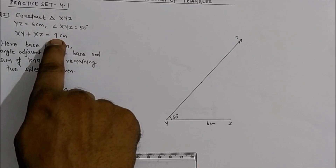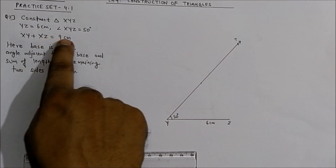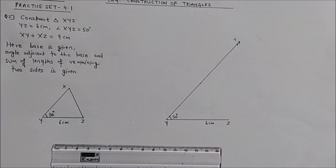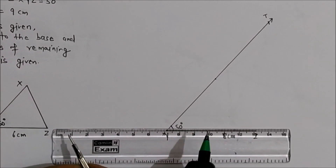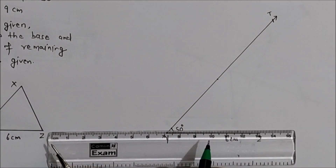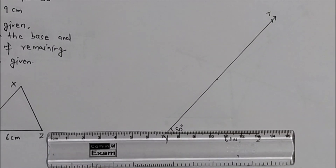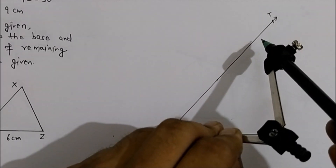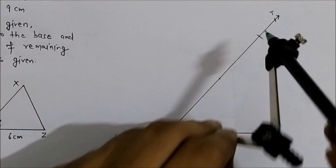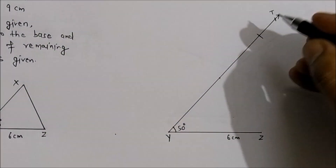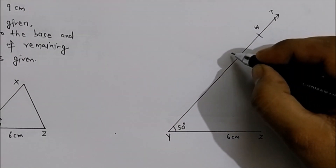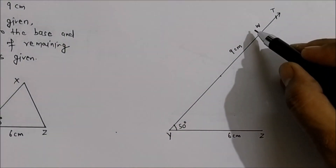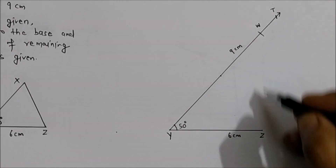The sum of the two sides is given as 9 cm — XY + XZ = 9 cm. From point Y we need to draw an arc of 9 cm. Take a distance of 9 cm and from point Y cut an arc of 9 cm, marking this point as W. Join W to Z.